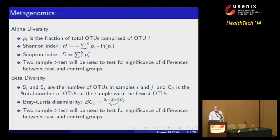The final metric of metagenomic analysis is beta diversity, which looks at how similar two samples are based on their OTU makeup. The Bray-Curtis dissimilarity index is one of the main measures of beta diversity, and again the two-sample T test is used to test the difference between case and control groups.